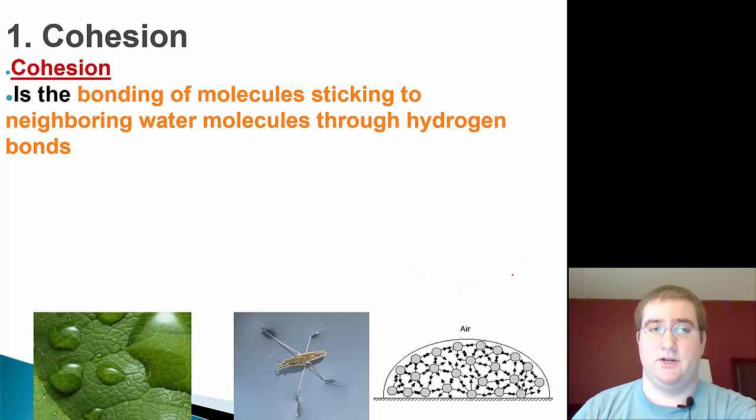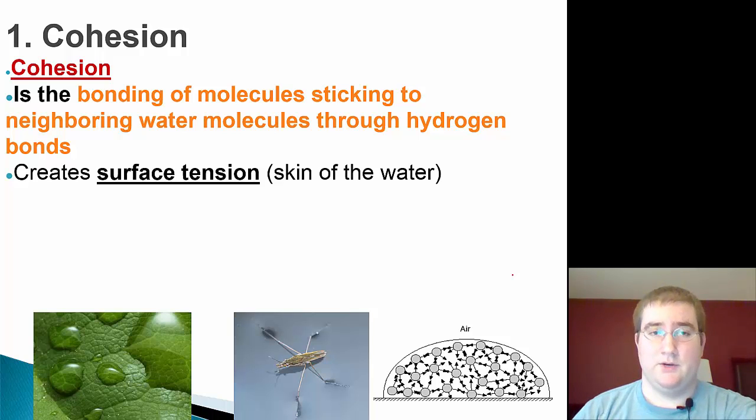So the first one is cohesion. So cohesion refers to the bonding of water molecules to neighboring water molecules. So cohesion is water sticking to water. Cohesion causes surface tension. Surface tension is something that you've been familiar with. It's that skin of the water. So it's the reason why insects can walk on water like the water strider in the bottom of the slide. It's also why you can form water droplets on wax paper and pennies. It's because surface tension are those water molecules that are actually sticking to themselves and creating that skin.